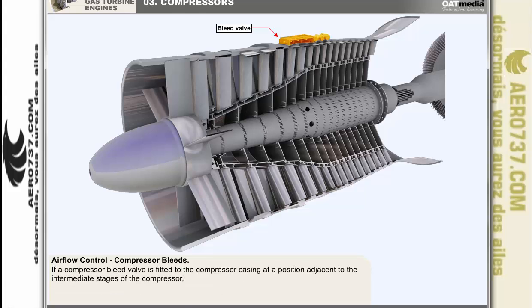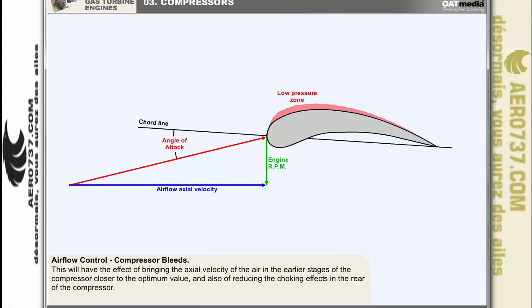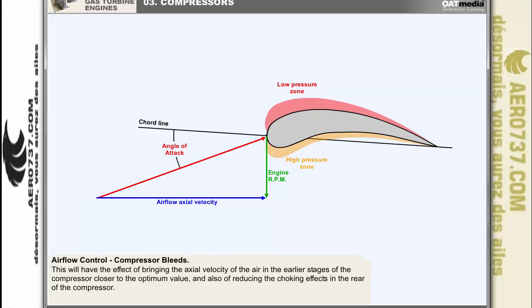If a compressor bleed valve is fitted to the compressor casing adjacent to the intermediate stages, it can be opened at low RPM and during engine acceleration to allow some of the excess volume of air to escape. This will bring the axial velocity of the air in the earlier stages of the compressor closer to the optimum value and also reduce the choking effect in the rear of the compressor.